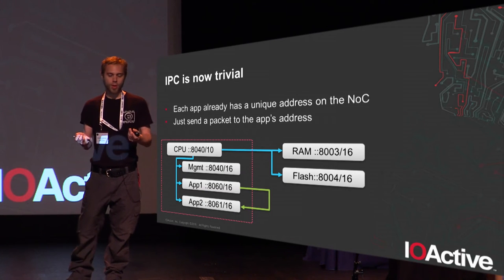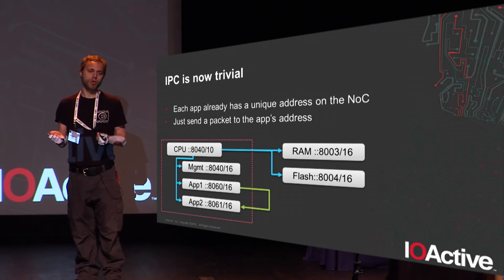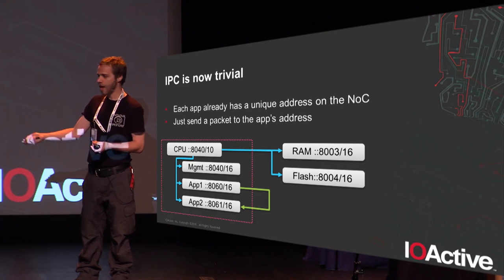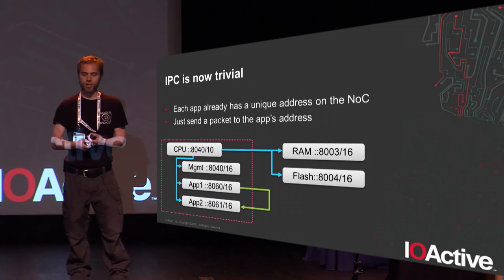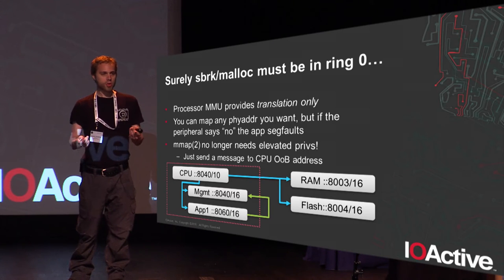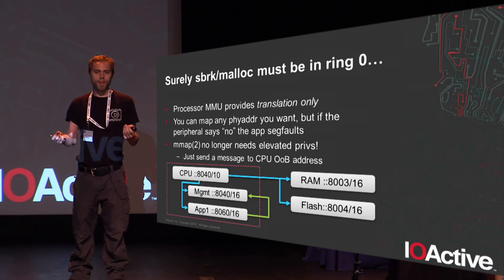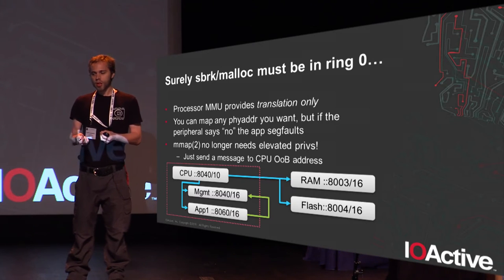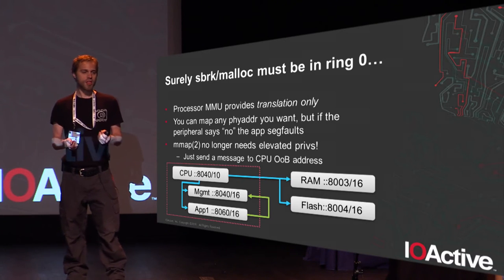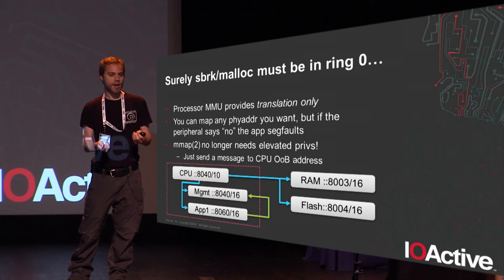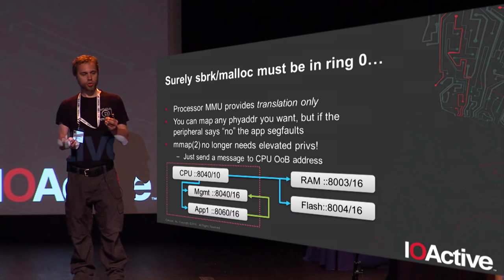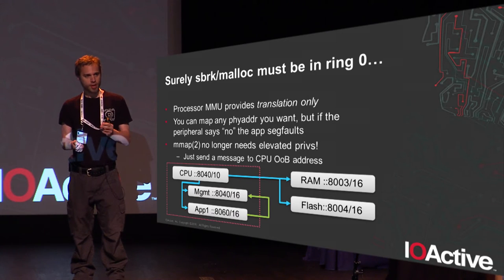Inter-process communication is trivial because we have a unique address for each application on the network, so we can send a message from one application directly out into the network to another process. The only remaining item from the list of four that we can't do in user space is memory management. It turns out we can eliminate this too, because since individual nodes in the network can authenticate messages based on their origin, we can do access control at the physical address level in the individual devices.